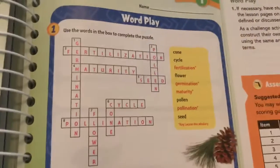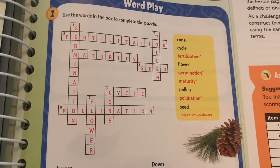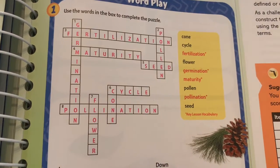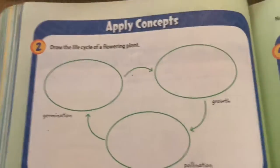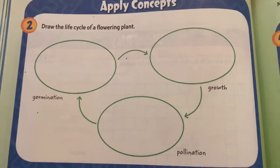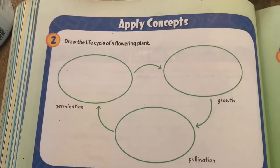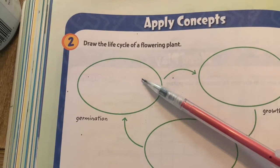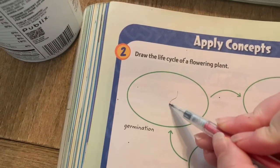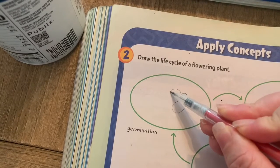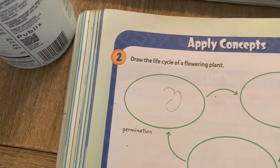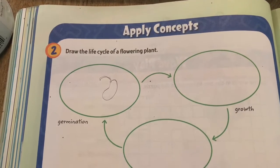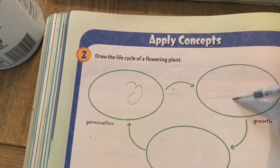Go ahead and pause this part right here so you can check your crossword puzzle. Okay, number two says draw the life cycle of a flowering plant. For germination, you should be drawing a little seed with a small root coming out of it — it doesn't need to be perfect. For growth, you would draw a young plant with some soil and roots coming out of it.